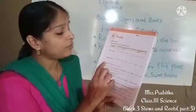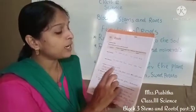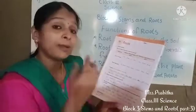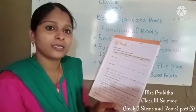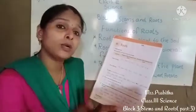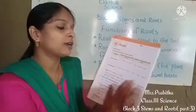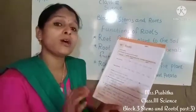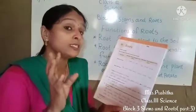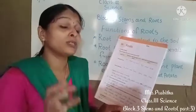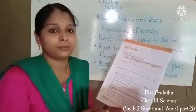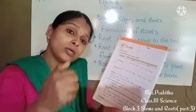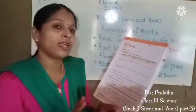For the conclusion, from this experiment we can conclude that if there are no roots, the plant will not get water and it will die. The second question is: why do roots grow downwards into the soil? The roots grow downwards into the soil in search of water. So the answer is: in search of water, the roots grow downwards into the soil.